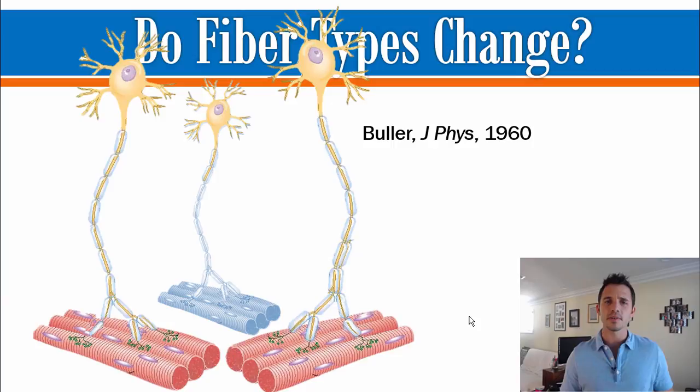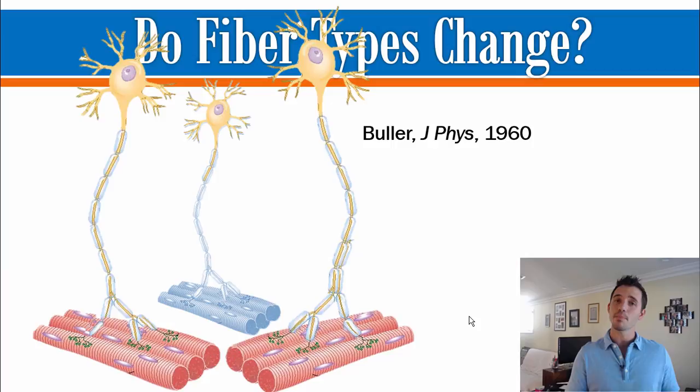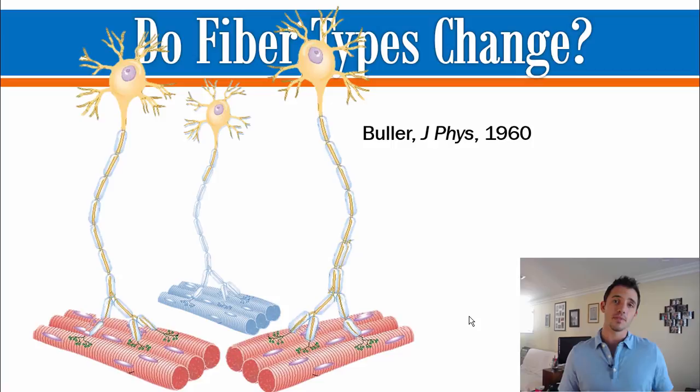It's important to know at the background here: all of the fibers in a motor unit are of the same fiber type. So another way to think about that is the fiber type is determined by which type of neuron activates it. If it is a type 1, or slow twitch neuron, all the fibers in that motor unit are going to be slow twitch fibers. And if it's fast twitch, it's going to be fast twitch fibers.